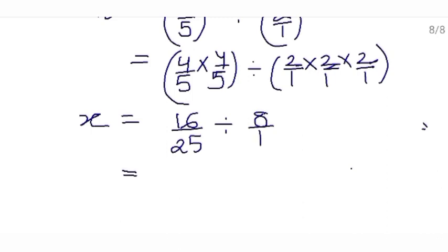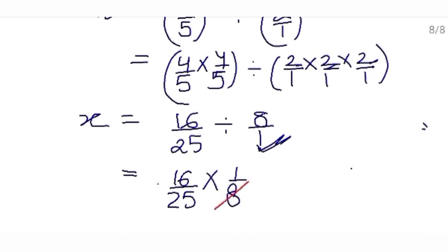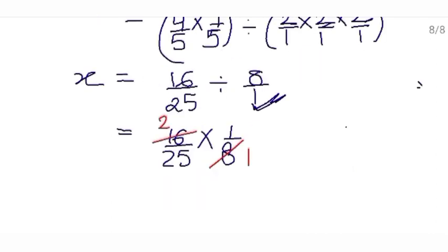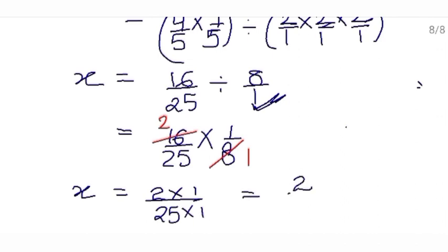When we divide two rational numbers we write the first rational number same, replace the division sign by multiplication, and write the reciprocal of the next number: 1 upon 8. Now this 8 and this 16 are both divisible by 8 — 8 ones are 8, 8 twos are 16. So in numerator you have 2 × 1, and in denominator 25 × 1, which equals 2 upon 25. This is your answer.